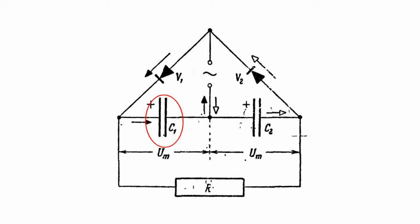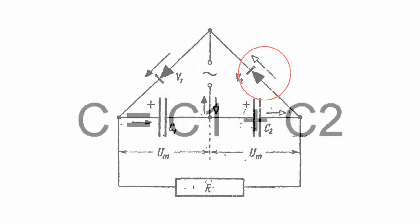During the second half of the period, capacitor C2 is charged through rectifier V2. At the same time, the voltages at capacitors C1 and C2 are added.